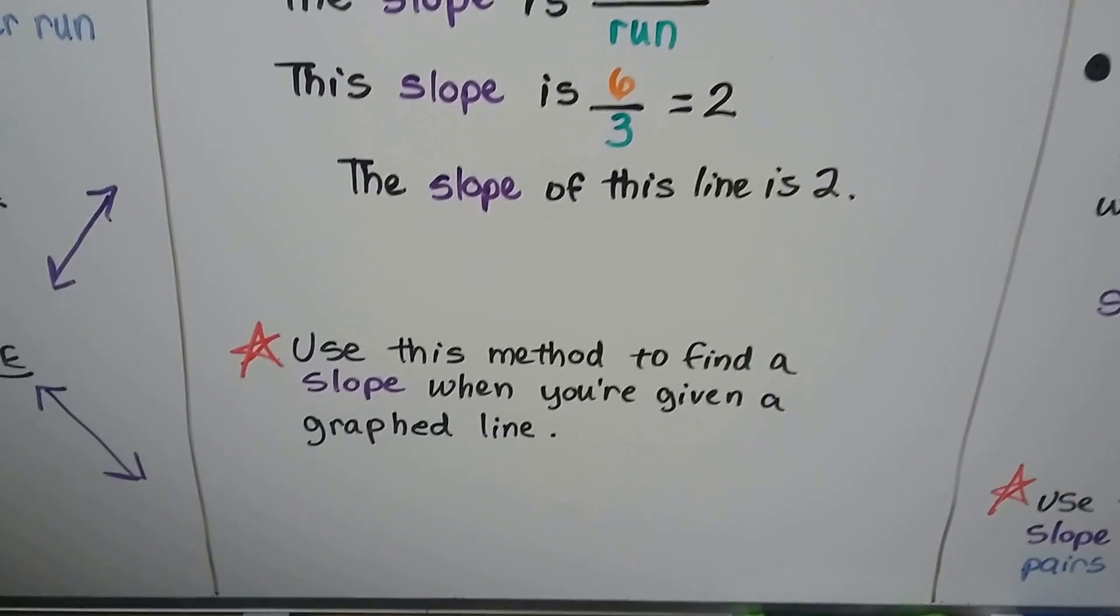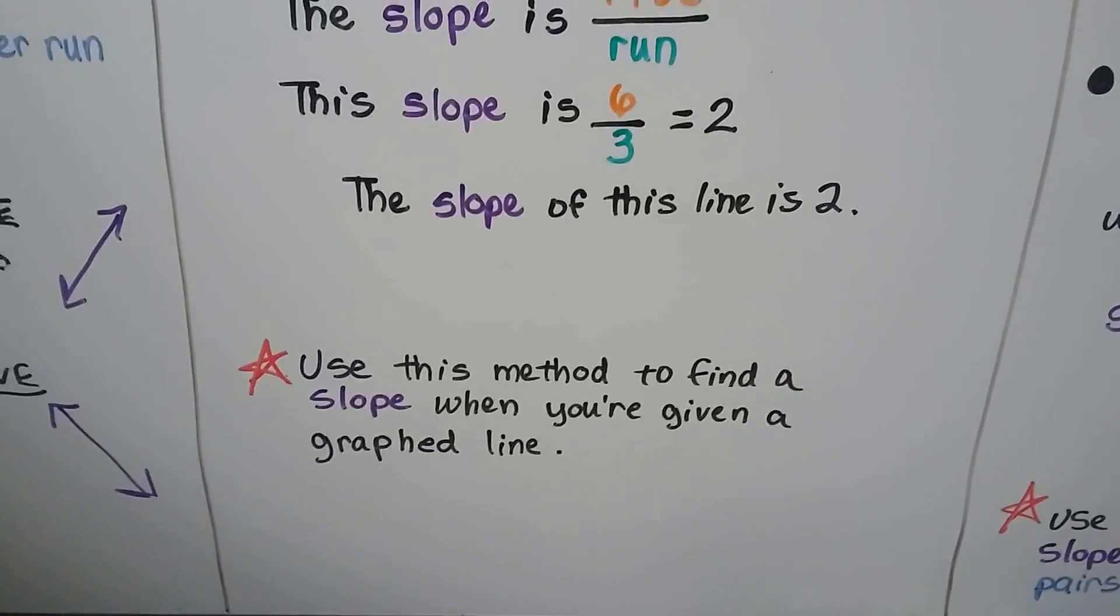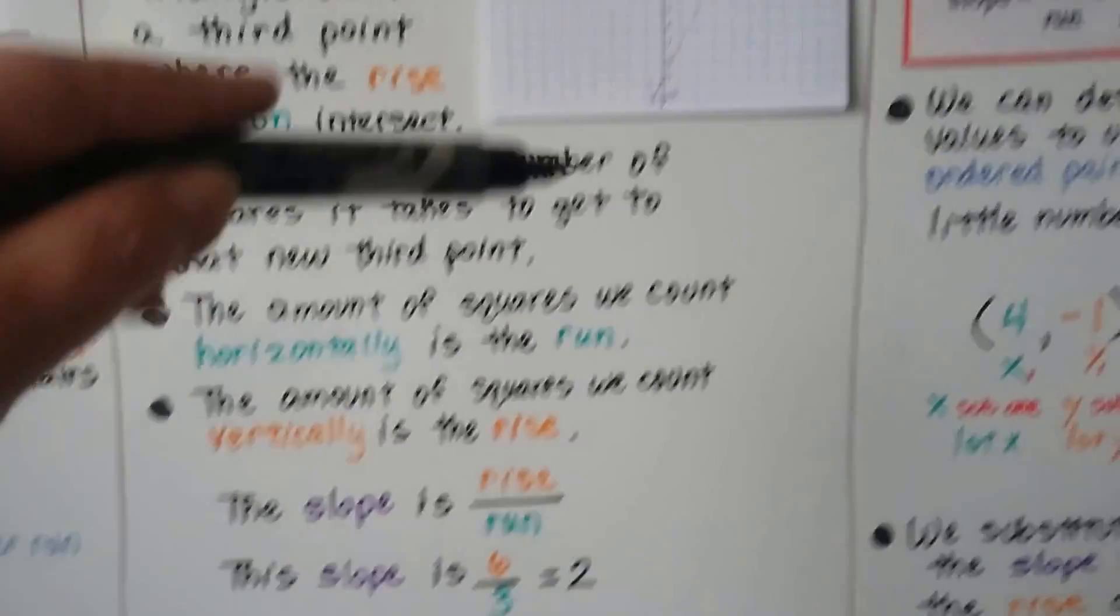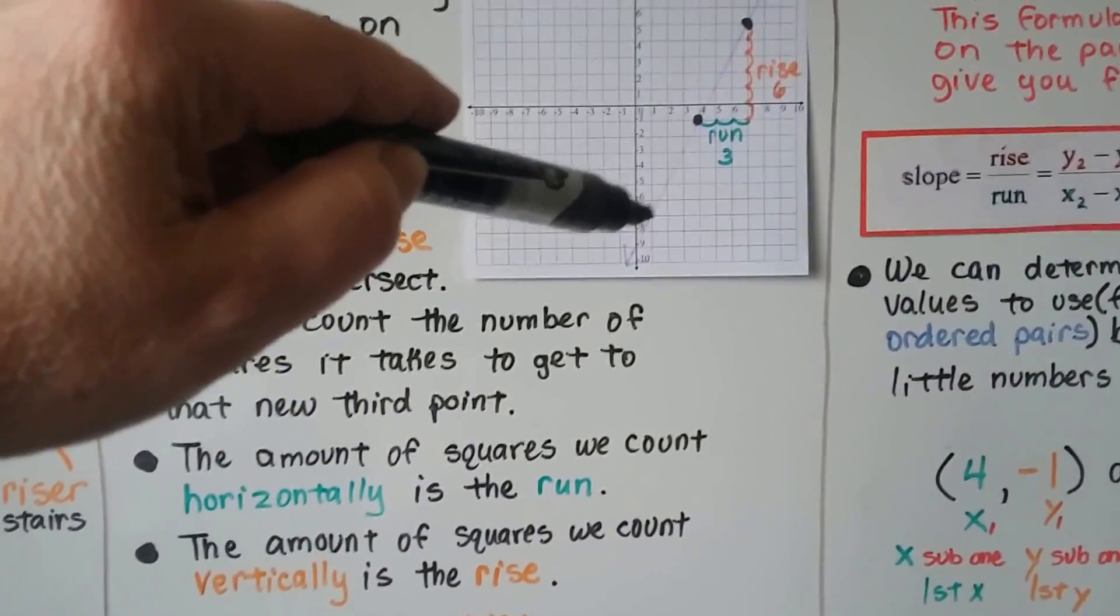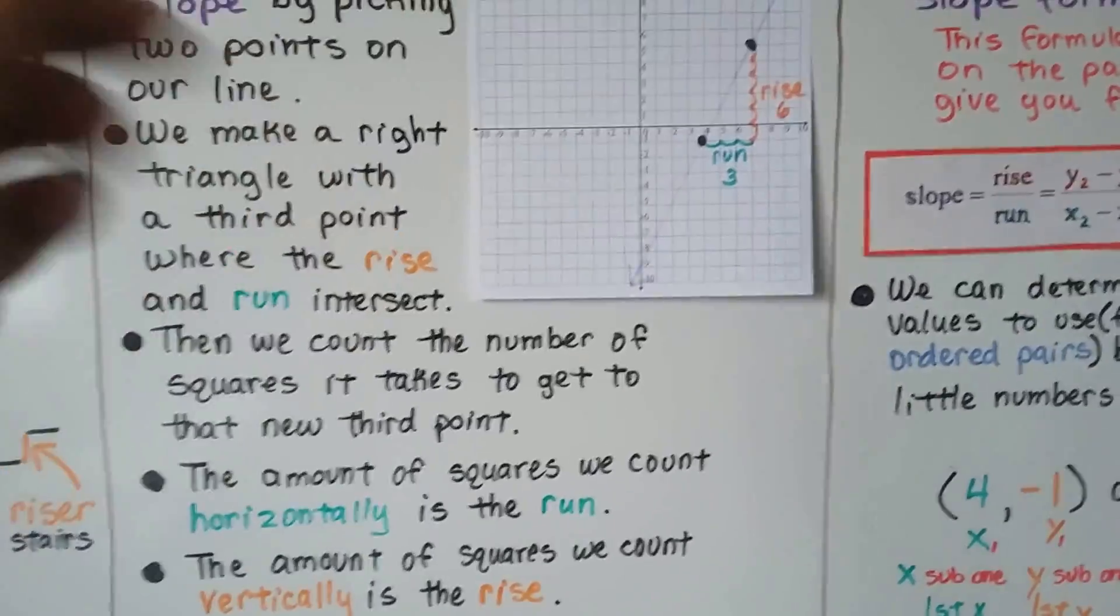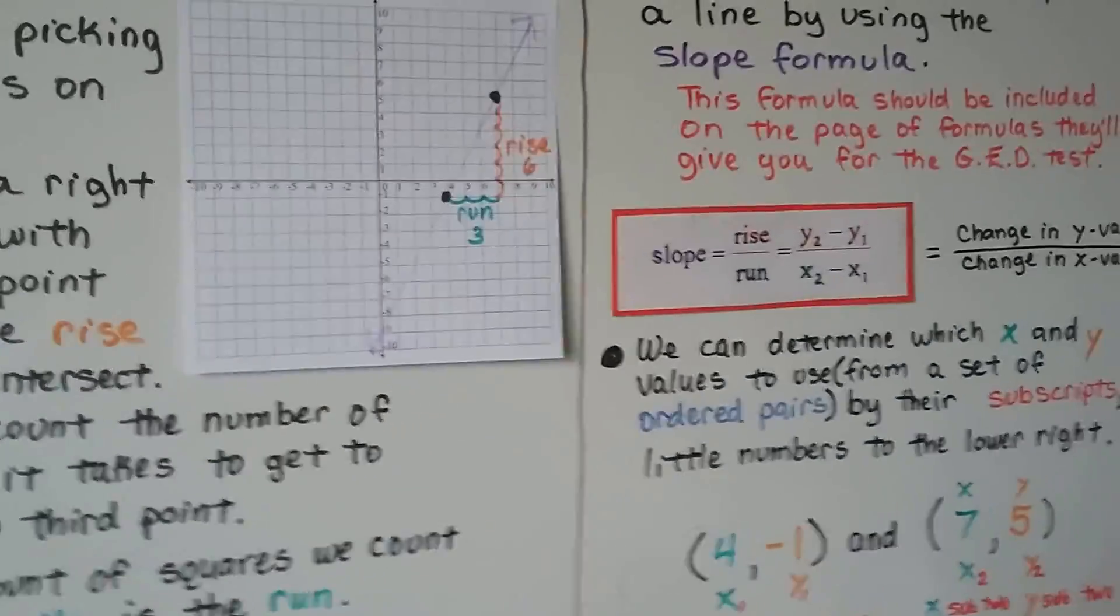We use this method to find a slope when we're given a graphed line. Whether it has points on it or not, we can pick points. You just look at the rise and the run, and you get the slope.